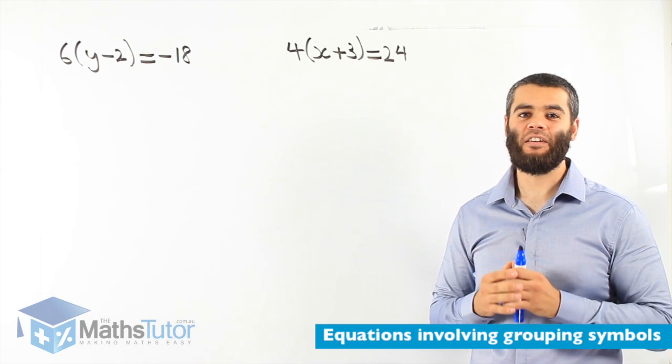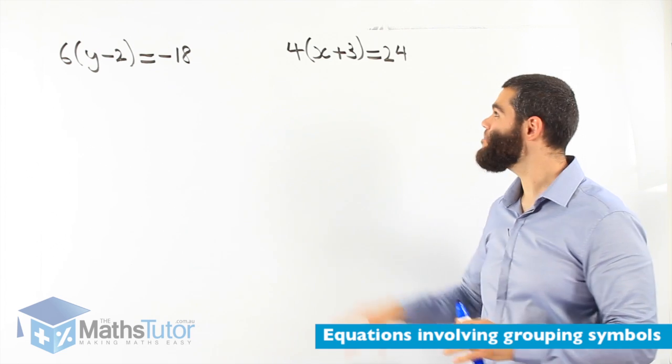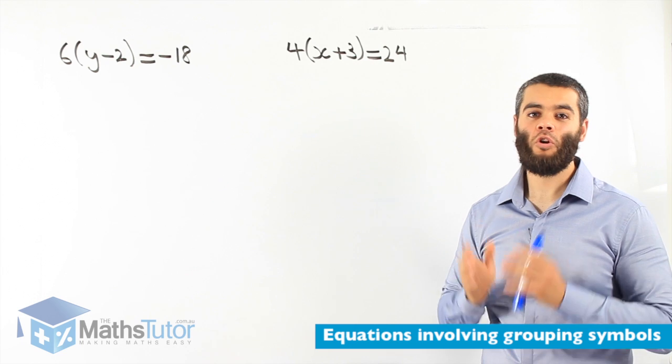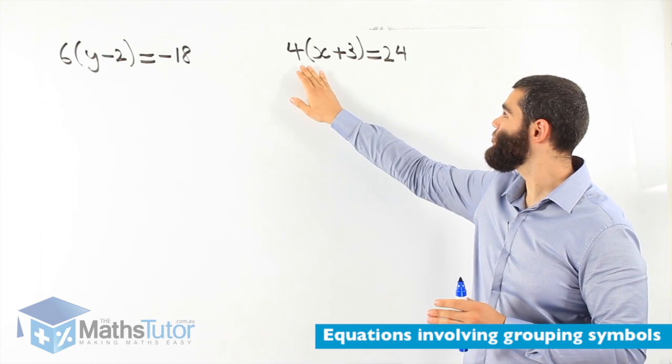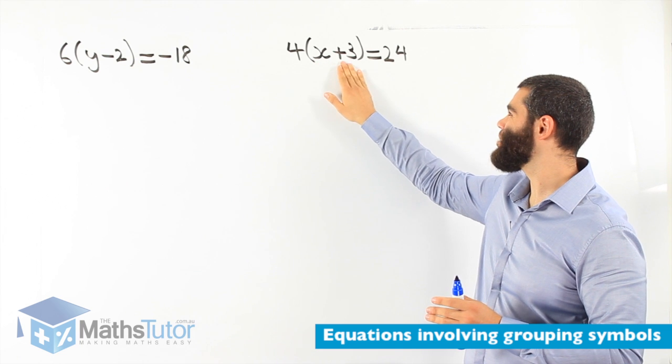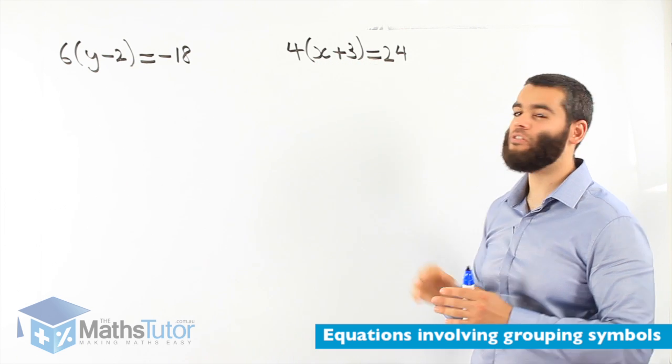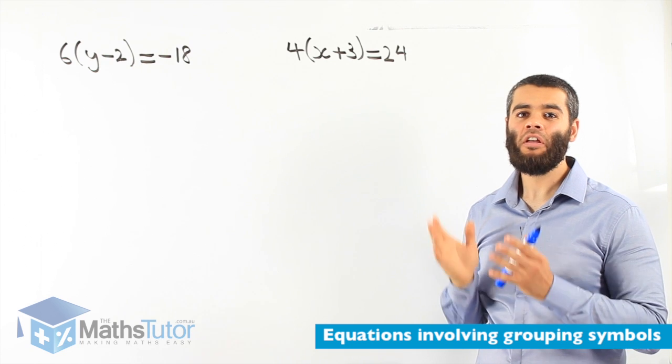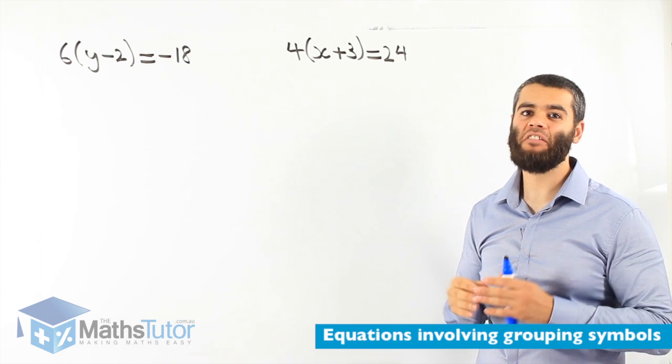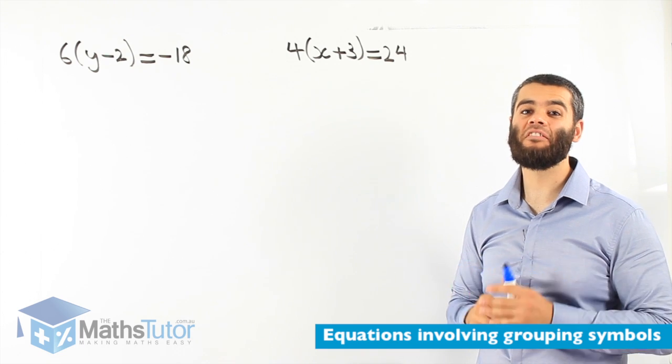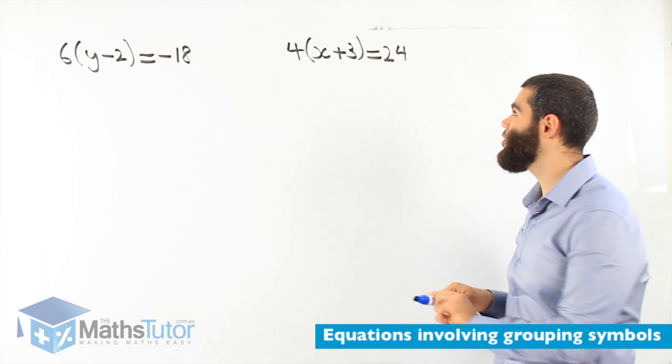Hey guys, again more equations, this time with grouping symbols. What do we do here? We have 4 open bracket x plus 3 close bracket equals to 24. How do we solve an equation like that? It's easy. What do we do first? We actually expand.